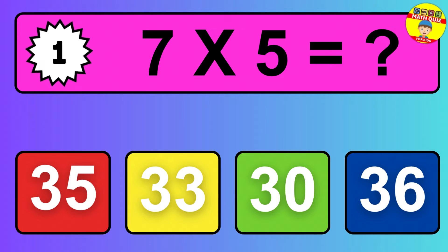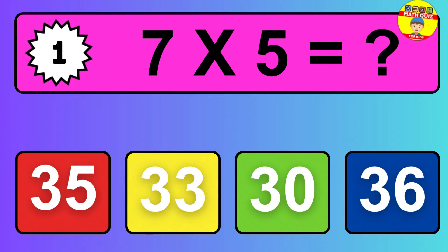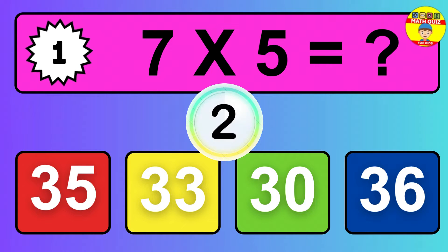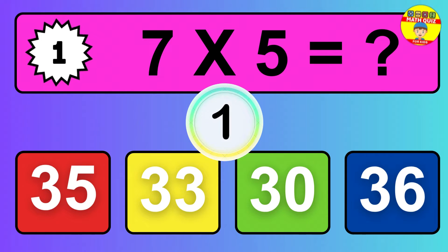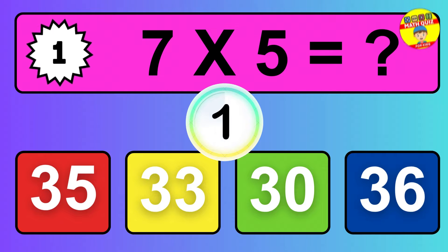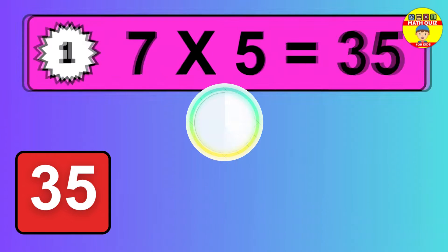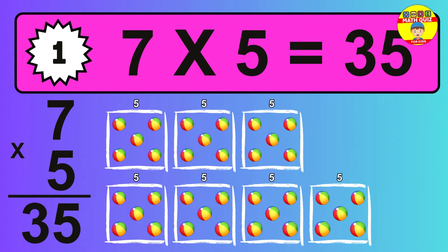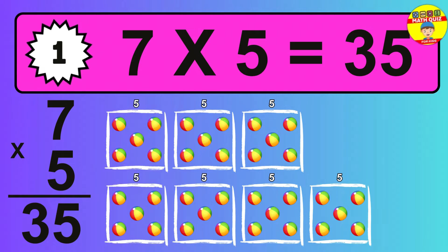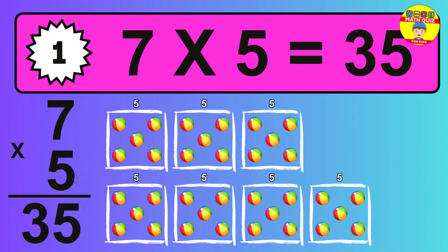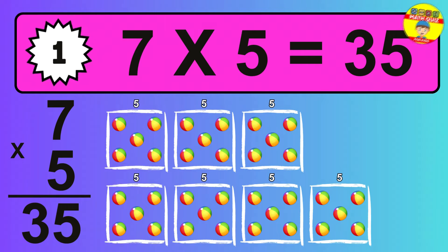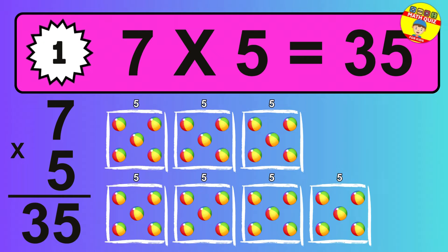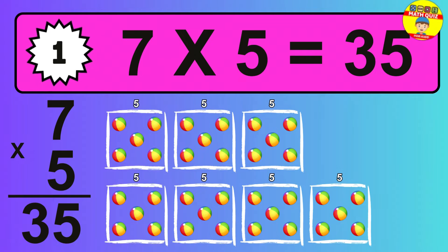Question 1. 7 times 5 equals what? The answer is 7 times 5 is 35. To calculate, we have 7 groups with 5 balls each one. So, how many balls do we have? 35 balls.